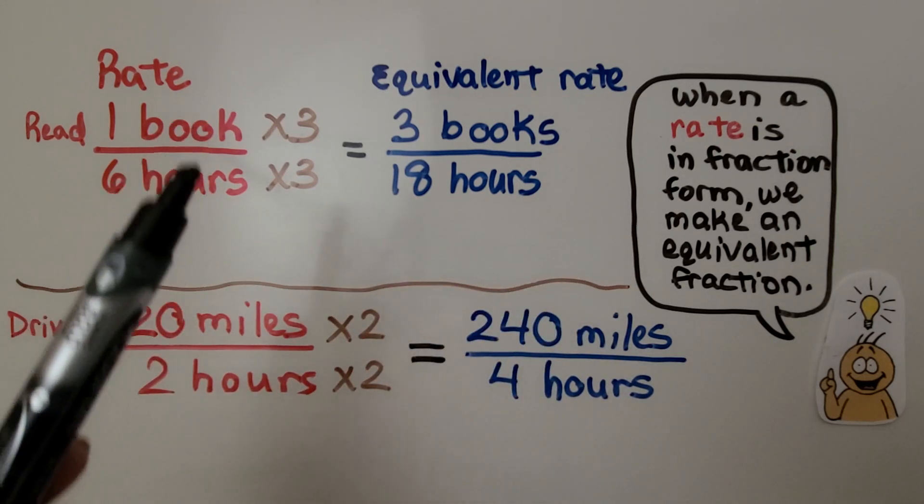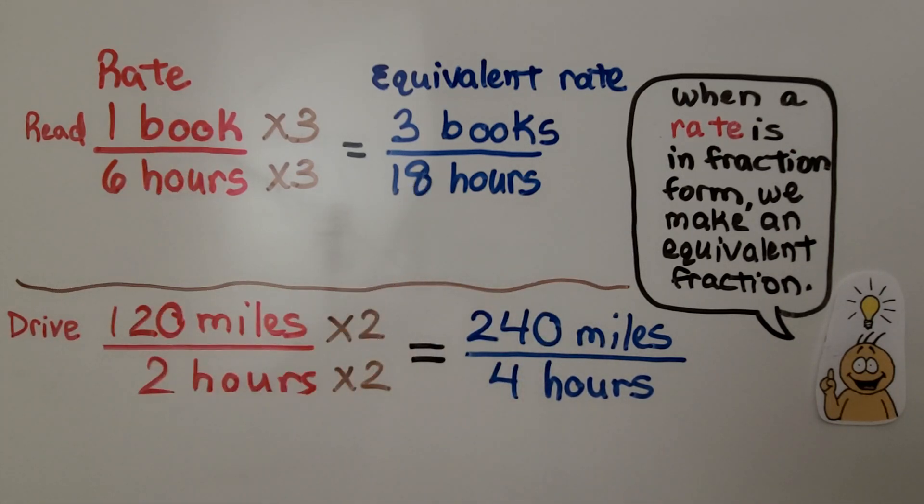When a rate is in fraction form, we make an equivalent fraction. If we drive 120 miles in two hours, that means we could drive 240 miles in four hours.